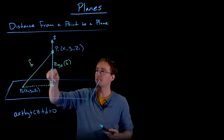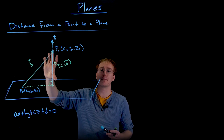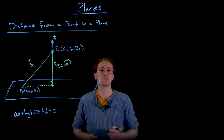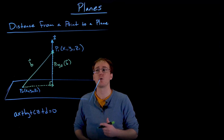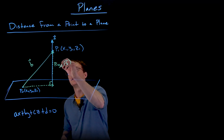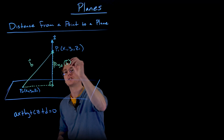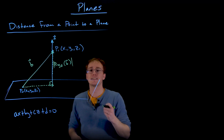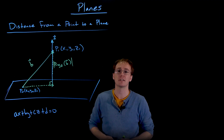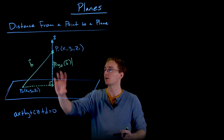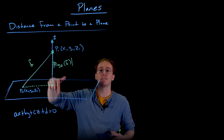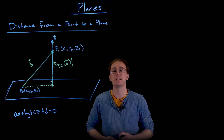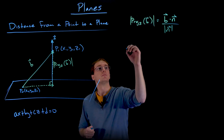How much of our n vector contributes to our b vector? The amount our n vector contributes to that b vector is going to be the distance between our point and plane. So the projection of b onto n is technically a vector itself, but we're trying to find the length of that vector to find the height of this right triangle in our picture.